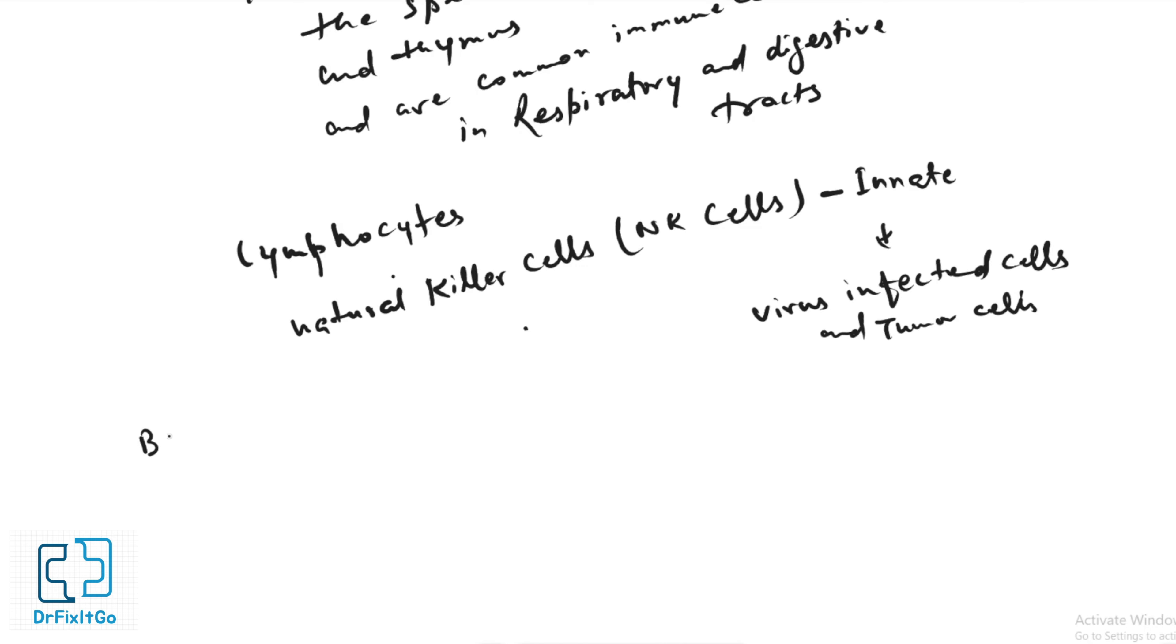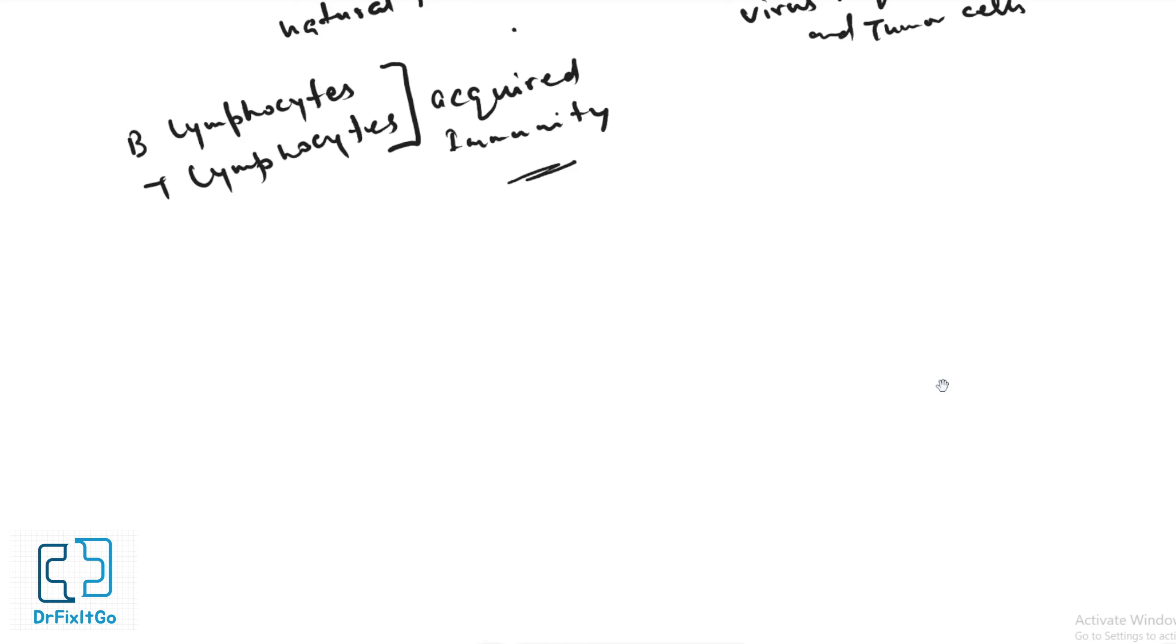The two other cell types, B-lymphocytes and T-lymphocytes, are key cells of acquired immunity. They increase in number dramatically during the course of an infectious disease but have very different functions. Lacking visible granules, monocytes and lymphocytes are often called agranulocytes.